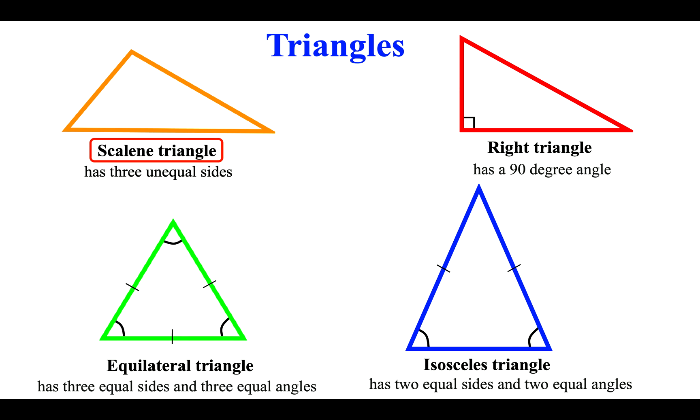Scalene triangle has three unequal sides. Right triangle has a 90 degree angle. Equilateral triangle has three equal sides and three equal angles. Isosceles triangle has two equal sides and two equal angles.